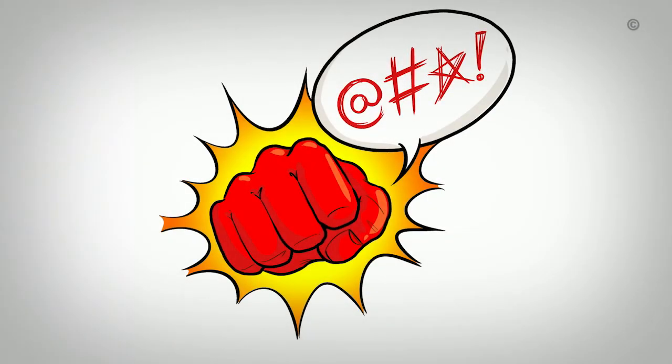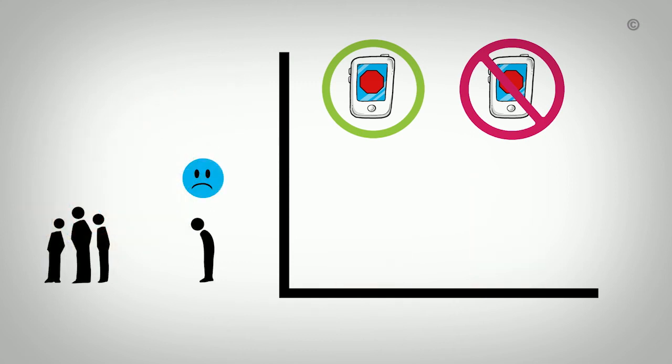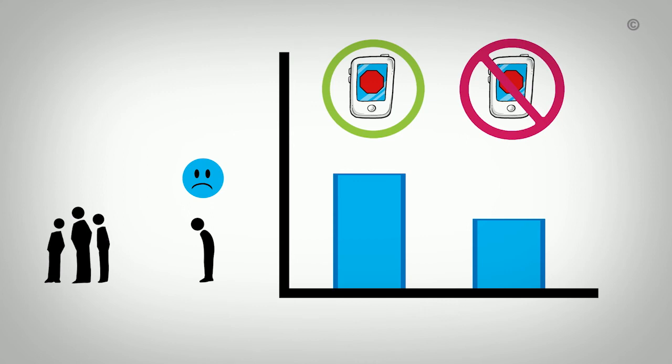Sometimes, an intervention can produce unanticipated negative outcomes or harms, which should be considered when making a decision. To assess the magnitude of negative outcomes, we calculate the number needed to harm, or NNH. The NNH tells us how many people would need to be exposed to an intervention in order for one unintended negative outcome to be observed. For example, let's say we are considering an anti-bullying campaign. The evidence indicates that the campaign is effective in reducing the number of bullying episodes. However, more children exposed to the intervention report feeling isolated compared to those not exposed. You can calculate the NNH to determine how many students would need to be exposed to the intervention for one student to feel more isolated. This will help you weigh the benefits of an intervention against the potential harms.